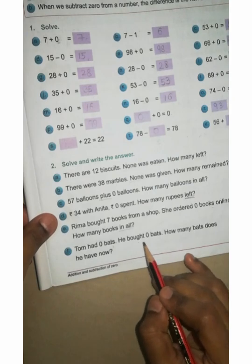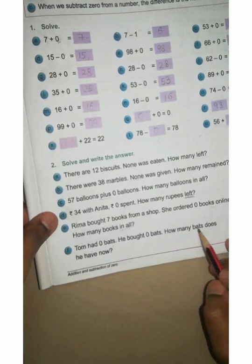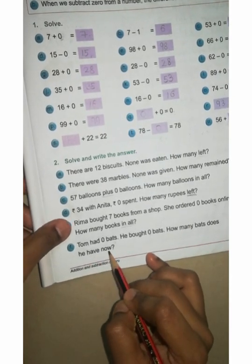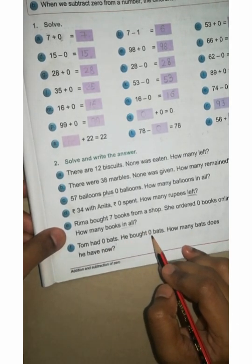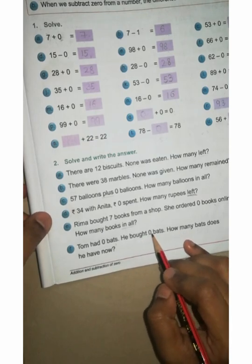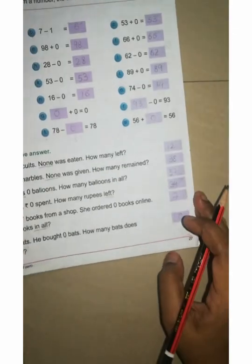Now F: Tom had 0 bats, he brought 0 bats, how many bats does he have now? Tom had already 0 bats plus 0. Okay. Now 0 plus 0, how much? 0.